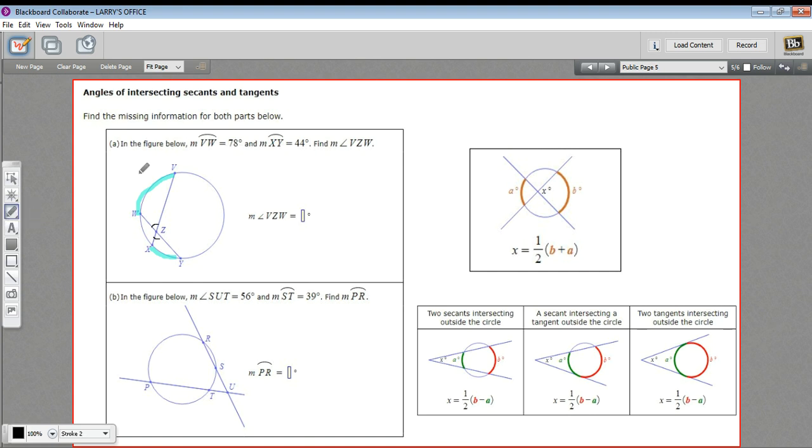VW is 78 degrees and XY is 44 degrees. When you have a situation like this, this rule over here on the right applies. You take those two arc lengths, you add them together and multiply by one half or divide by two. It's basically like taking the average of the two arc lengths that are intercepted to get the measure of this angle.